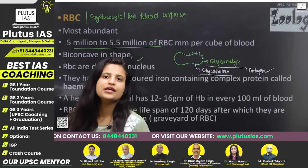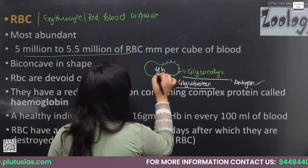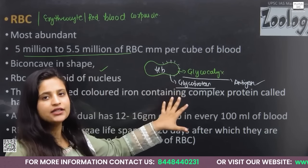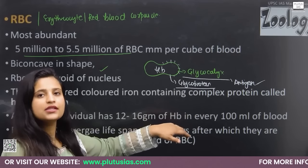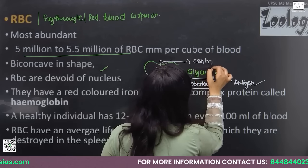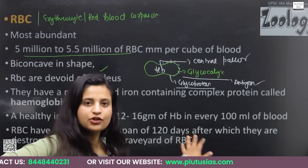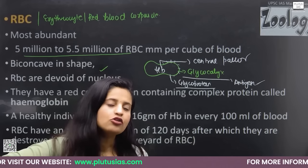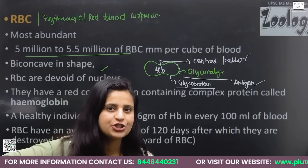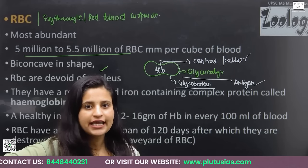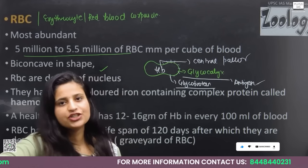RBCs do not have a nucleus or mitochondria, because RBCs contain the important pigment hemoglobin. At the center of the RBC, there is a hollow space known as the central pallor, where hemoglobin is present. Since RBC does not contain mitochondria — and aerobic respiration takes place in mitochondria — anaerobic respiration takes place in the cytoplasm of RBCs.